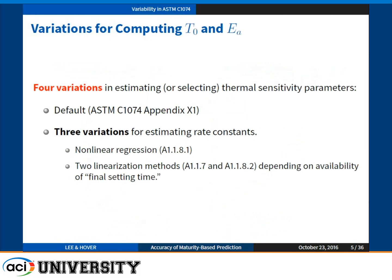So what is the variation for computing datum temperature and activation energy by ASTM 1074? If you read the 1074, you can recognize there are four variations. Number one is the default value — for the Nurse-Saul model, 0°C is the datum temperature that can be used; for the FHP case, activation energy of 40 to 45 kJ/mol is the default value range. If you want to apply a more rigorous method, there are three variations provided by 1074, induced by the numerical method used to fit the strength-time data to the hyperbolic function. Number one is the nonlinear regression method.